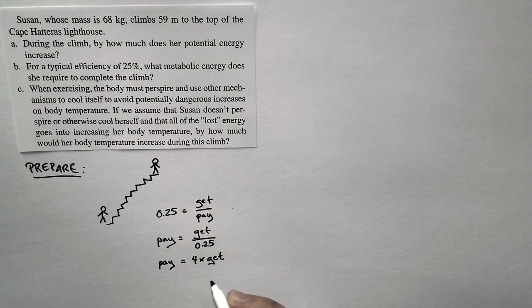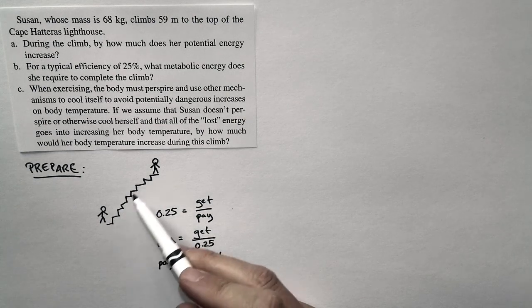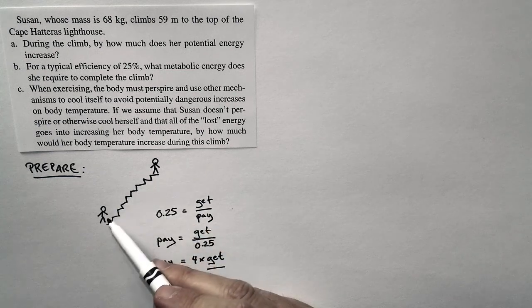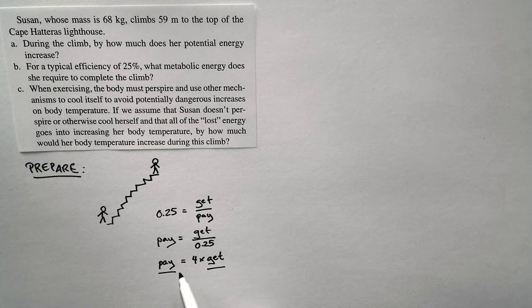We're going to compute how much her potential energy changes. That's what she gets. She has to pay four times that much. That's the metabolic energy.